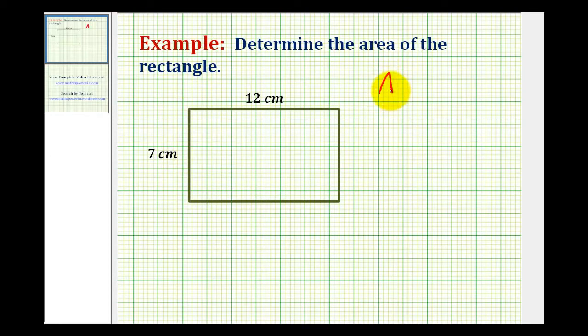The area formula for any rectangle is length times width. But if you forget this formula or confuse it with perimeter, as long as you understand what area means, we should be able to derive this formula on our own.